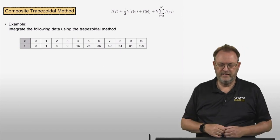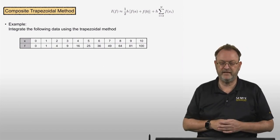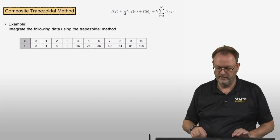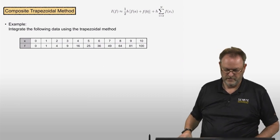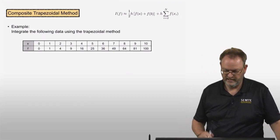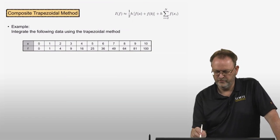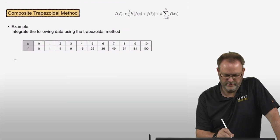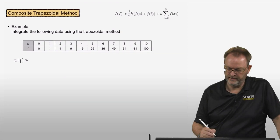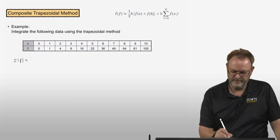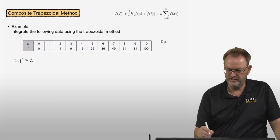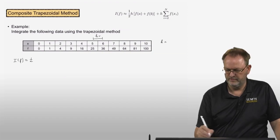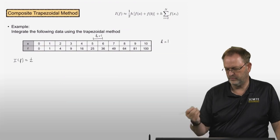Let's do an example: integrate the following data set using the trapezoidal method. Applying the formula: one-half times h times (f(a) + f(b)) + h times the sum of interior values. The spacing h between adjacent points is 1.